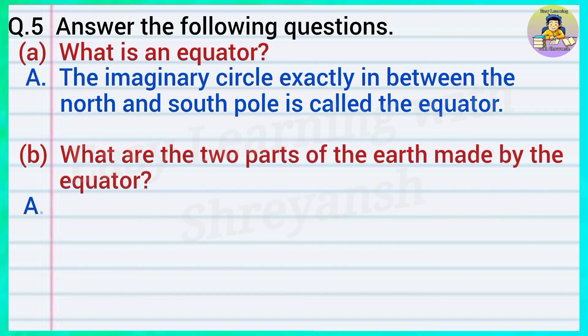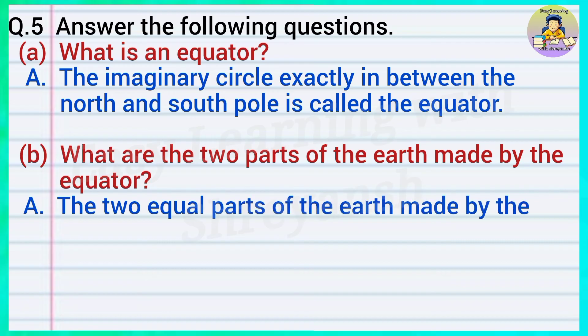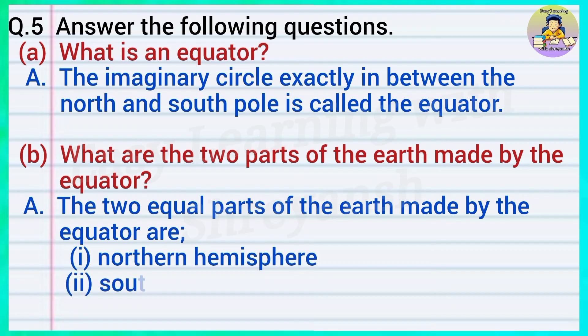Answer: The two equal parts of the Earth made by the equator are: 1) Northern Hemisphere, 2) Southern Hemisphere.